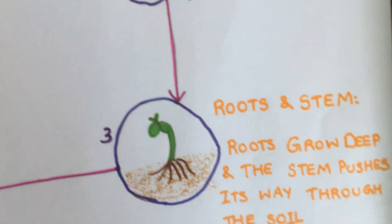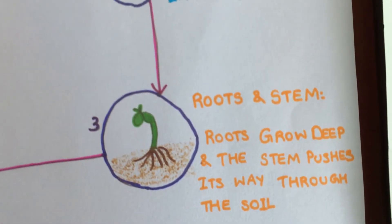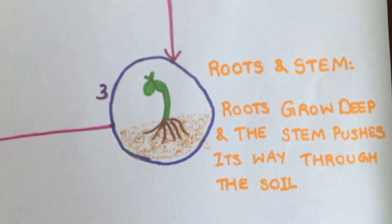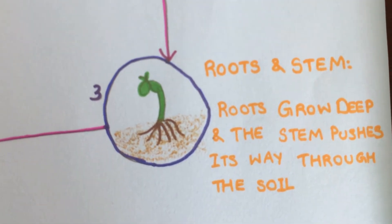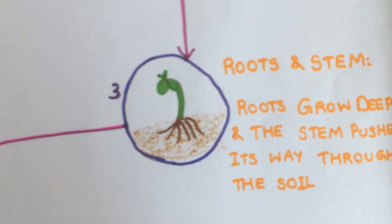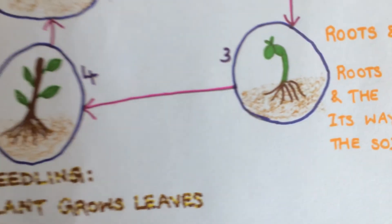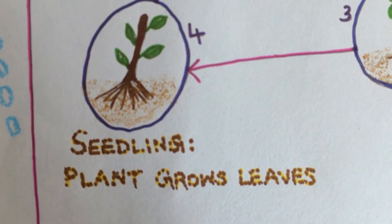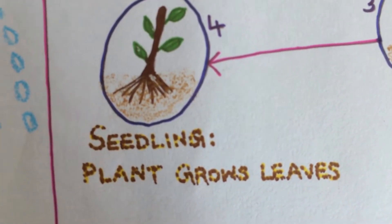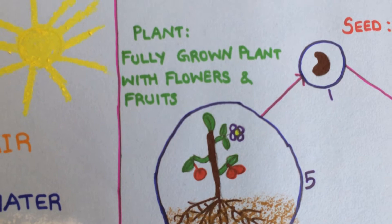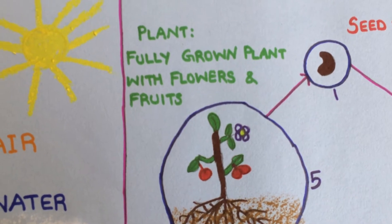The roots grow deep and the stump pushes its way through the soil — Seedling. The plant grows leaves. Fully grown.